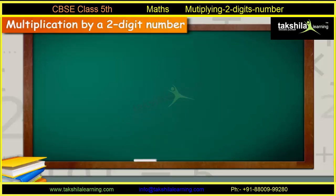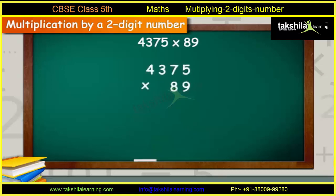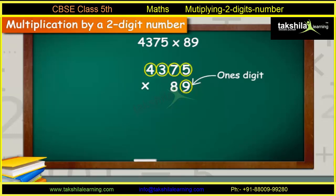Let us take another example. Here we need to multiply 4,375 by 89. Let us first arrange the numbers as shown. Let us first multiply the multiplicand 4,375 with the ones-digit of the multiplier 89, which will be 4,375 into 9, which comes out to be 39,375.